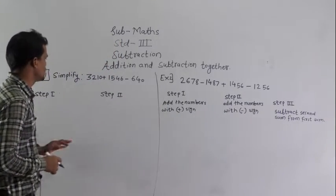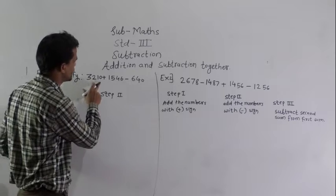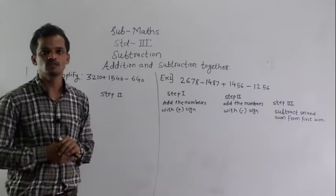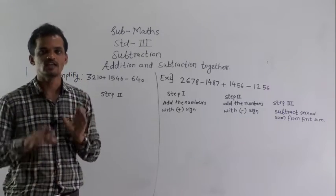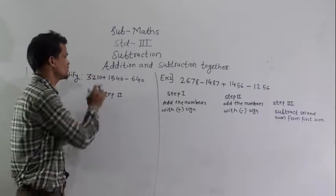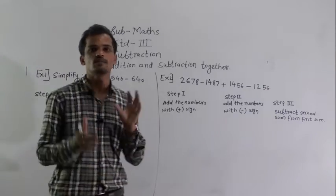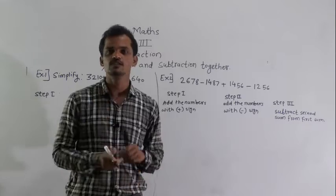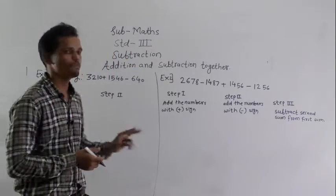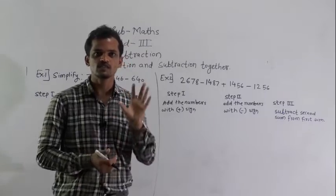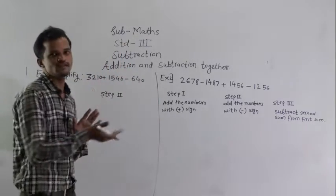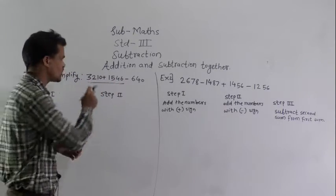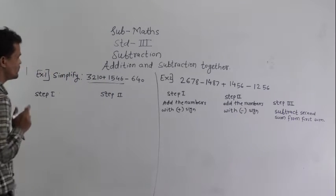See the example: simplify 3,210 plus 1,546 minus 640. Here we can observe that both signs — addition and subtraction — come together. So if addition and subtraction operations come in one example, always do addition first and then subtraction. We will solve this example in 2 steps. First step: add the 2 numbers and then subtract. First, add these 2 numbers because the addition sign is there.